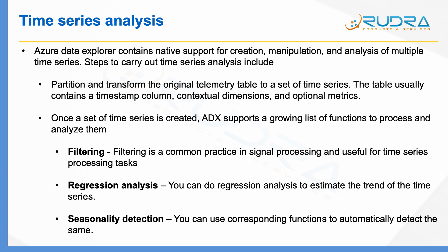When doing time series analysis, you generally follow two steps. The first step is to partition and transform the original telemetry data into a set of time series. For example, if you are comparing year-on-year gas usage, you partition the data yearly — comparing usage across 2016, 2017, 2018, and 2019. Once you have created the time series, you can use the inbuilt functions within Azure Data Explorer to process and analyze them.